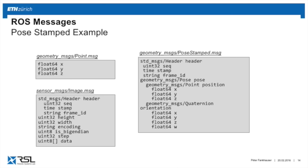Here's another example: a pose message. A pose is comprised of a position and an orientation. We have position x, y, z and rotation as a quaternion with four numbers. As you can see, this message is comprised of another message type — the Point defines the position. These messages can be nested into each other, making it easy to create new ones and build on existing standards.